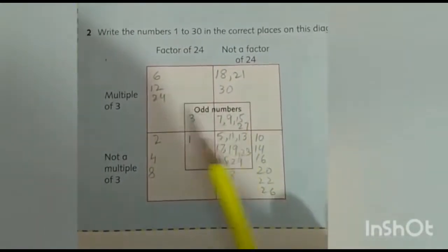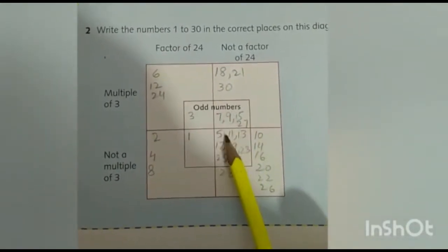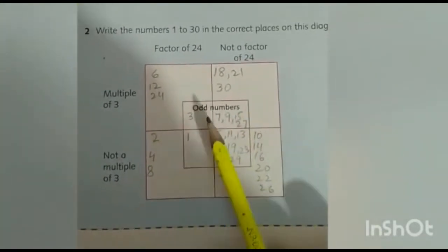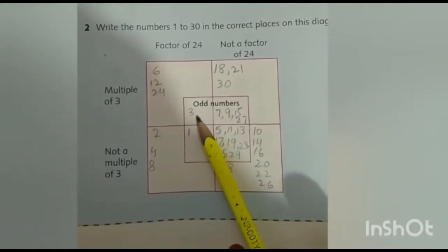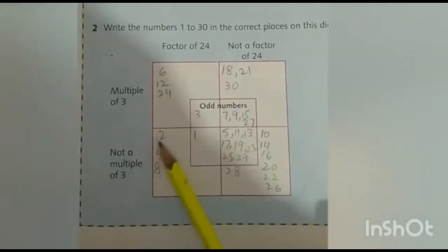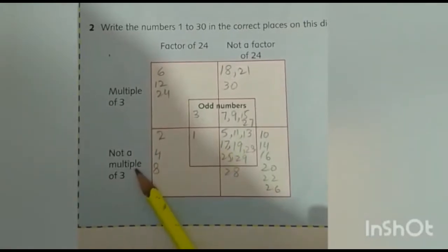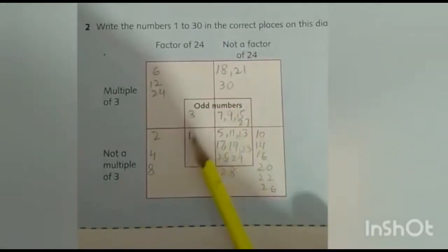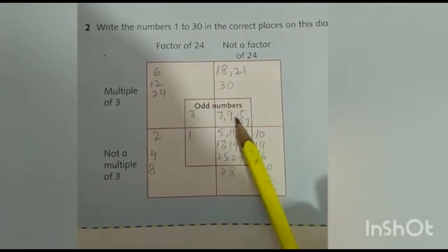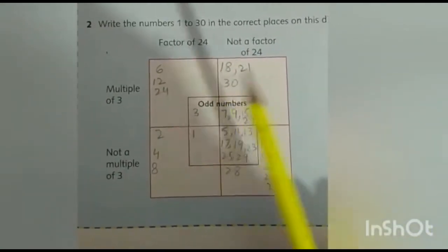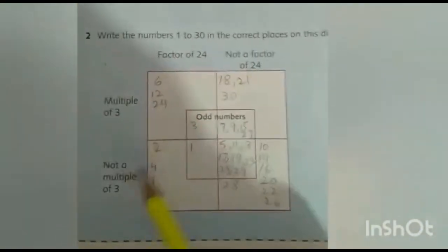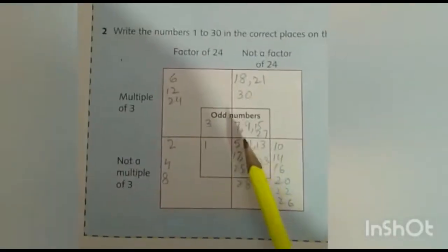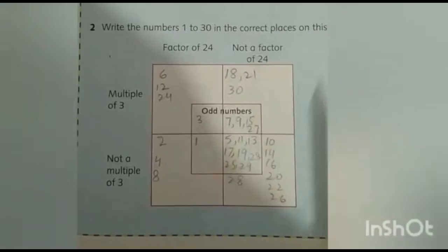Now look at odd numbers from 1 to 30. Whichever odd numbers appear will go in this column. Odd numbers are those which are not in the 2 times table. We have 4 columns: odd numbers that are in the 3 times table and are factors of 24, odd numbers in 3 and factors of 24, odd numbers that are factors of 24 but not in 3. Each number from 1 to 30 will appear in only one column and will not repeat.